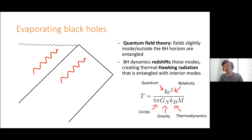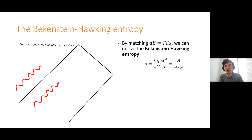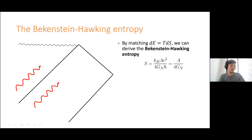We now know that black holes have this non-zero temperature. If I have a temperature and an energy — namely the mass of the black hole — I can use the Clausius relation DE equals T dS to reverse engineer what the entropy S must be. It turns out the entropy is proportional to the area of the horizon of the black hole, divided by four times Newton's constant. This should feel familiar from the Ryu-Takayanagi formula that Tommy mentioned — exactly the same area over 4G is showing up there.